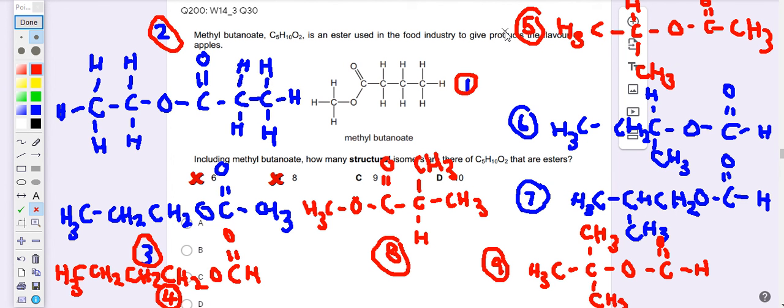So now we know we have confirmed that it is not the answer. Let's see if we can find another one. I don't think so. I think we have found all the structural isomers for C5H10O2 which are esters. So the answer should be 9.